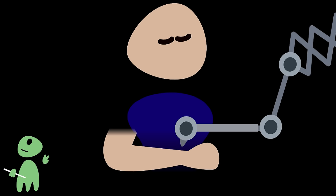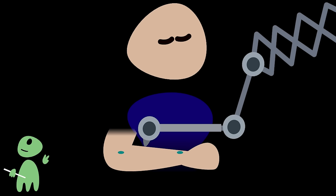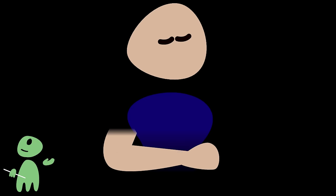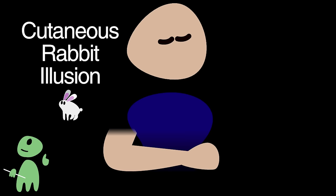There is an interesting experiment to demonstrate both this pre-processing, and the mental link between space and time. Tell an earthling to close their eyes, then touch their arm four times in rapid succession with a robot arm, two times near the wrist and two times near the elbow. The earthling will most likely perceive this as four taps progressing along their forearm, similar to the movement of a small animal. This is called the cutaneous rabbit illusion, which is just a fancy expression for skin bunny trick.